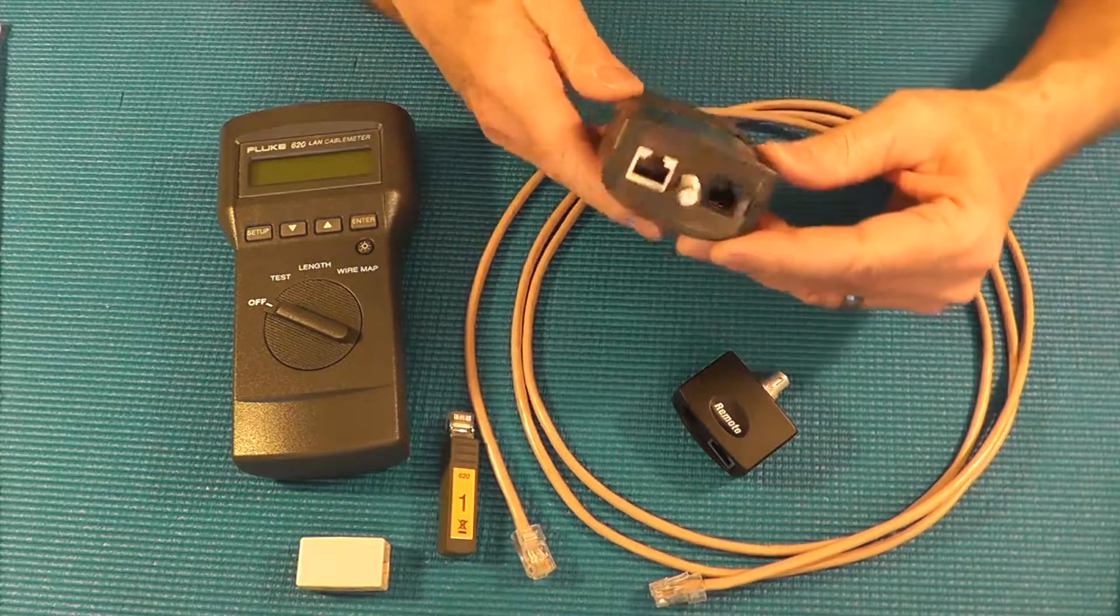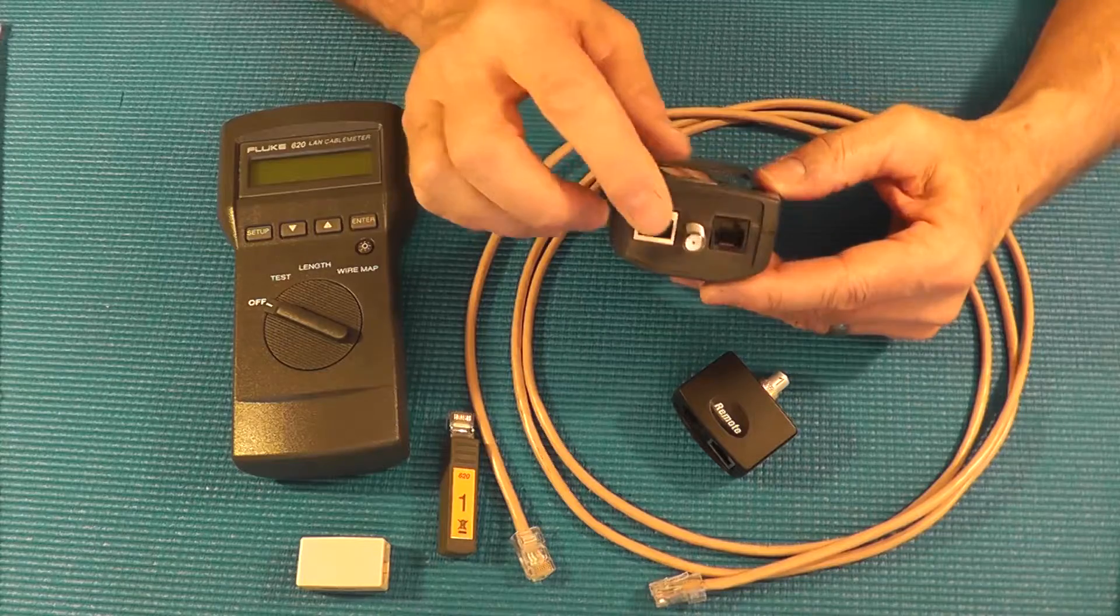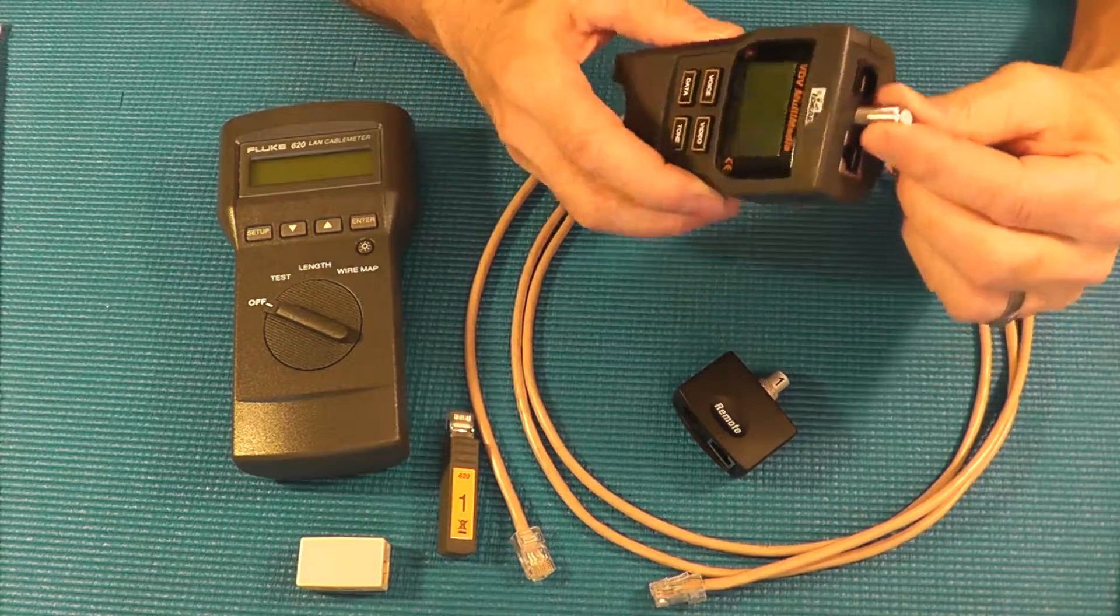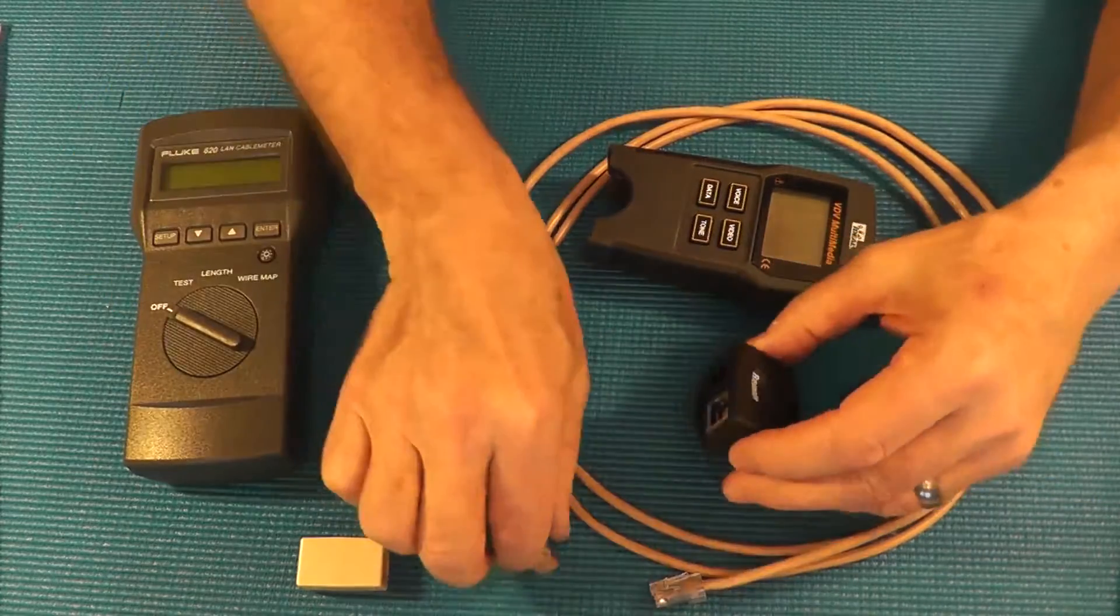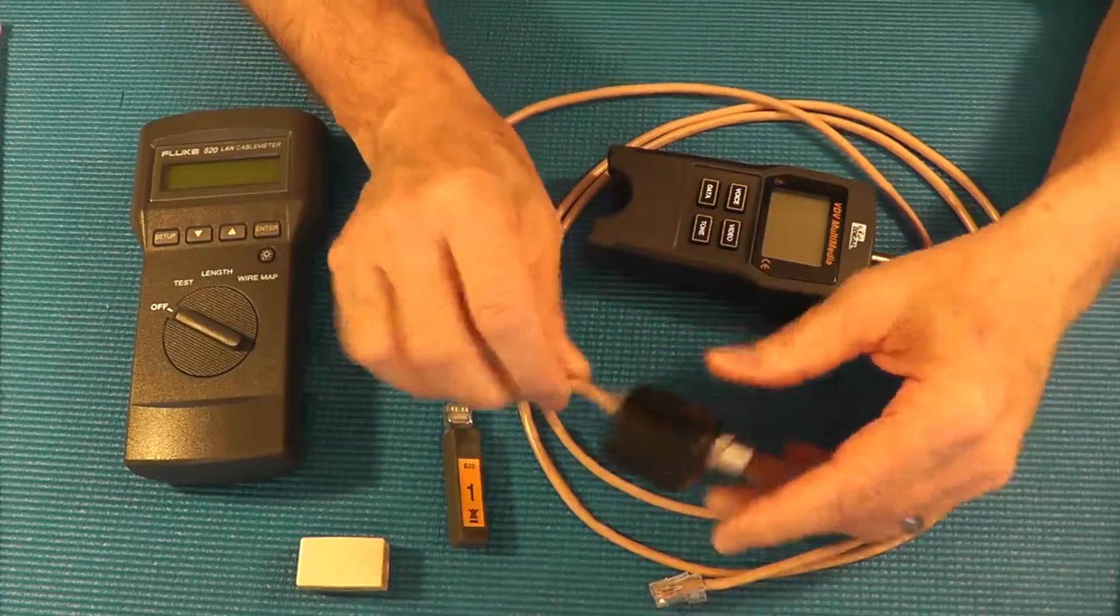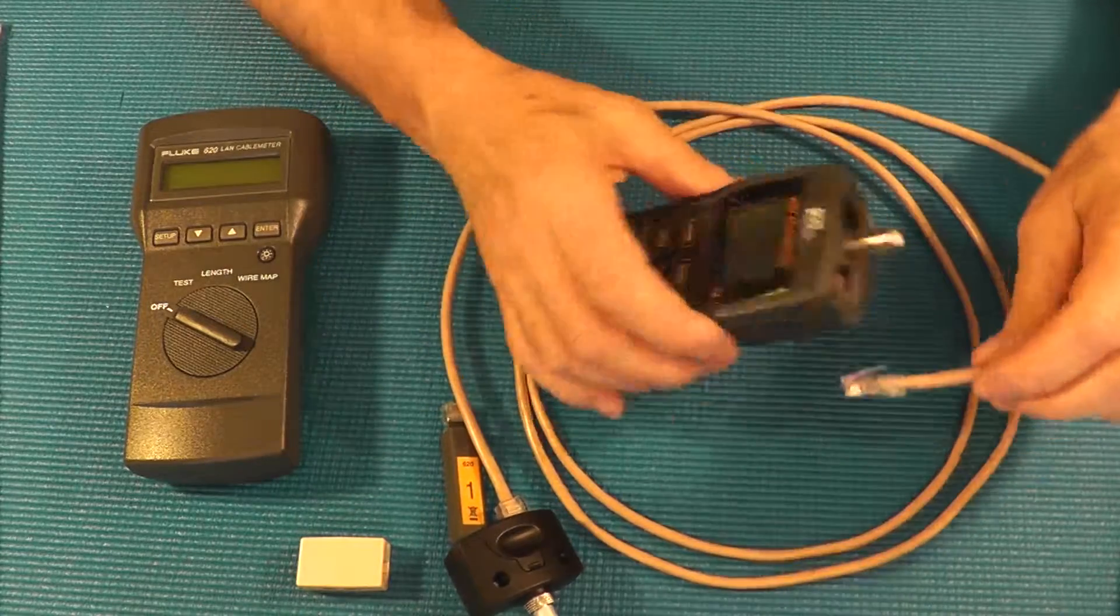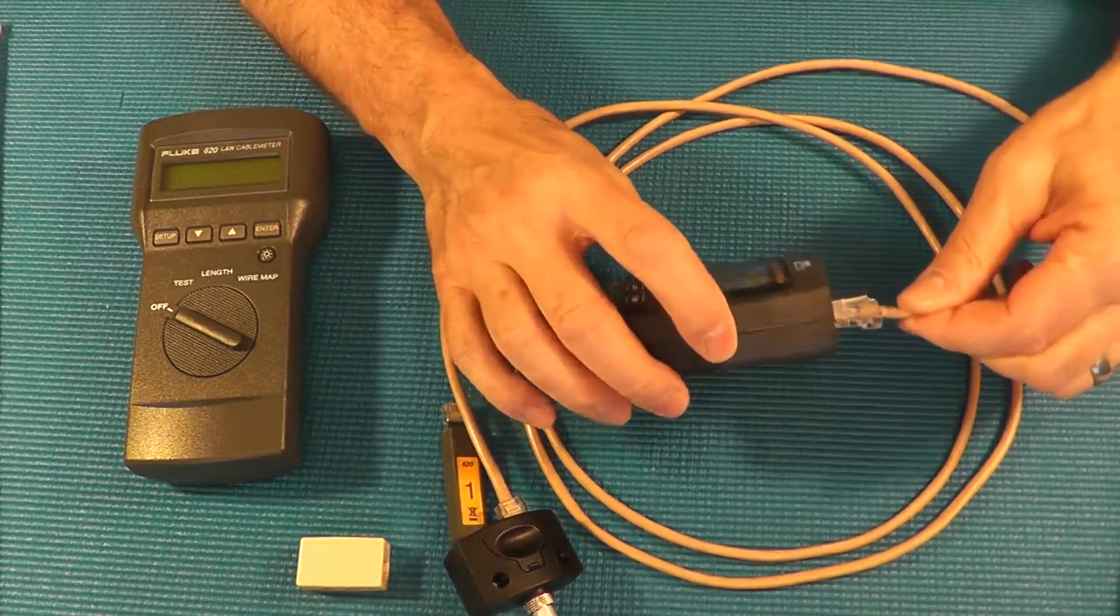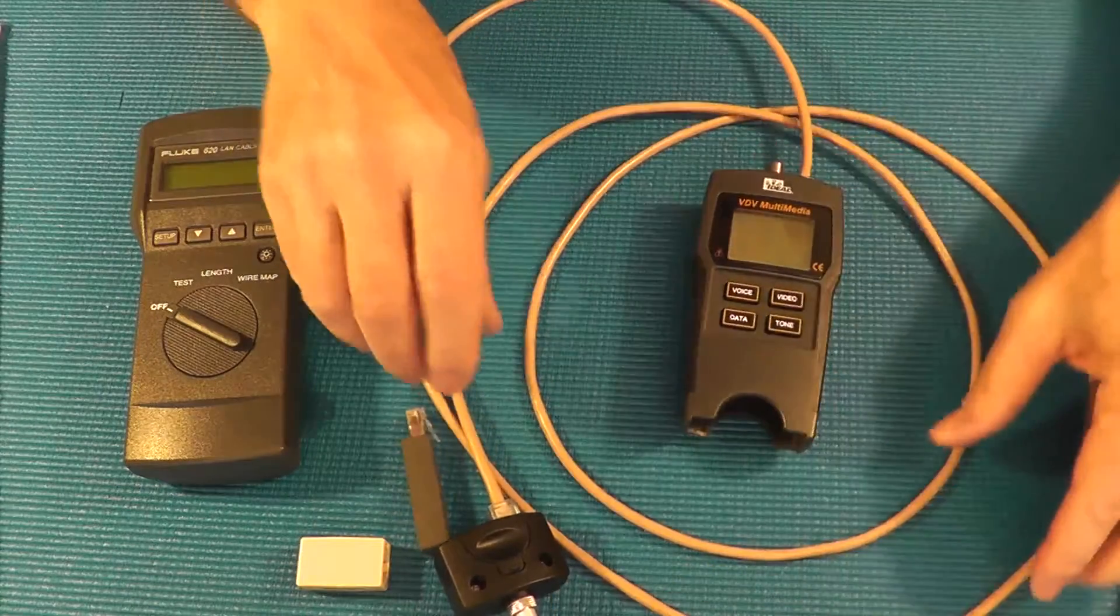When we look at the end here we see an RJ45 connector and an RJ11 connector and then the coaxial cable connection up here. Now in our case we're going to be using the RJ45 connector to test our data media so I'm going to make the connections for that and this is a very simple instrument to use.